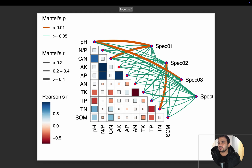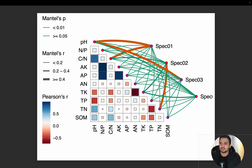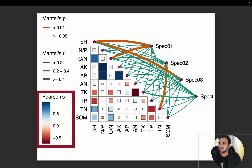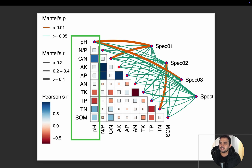This figure is representing two matrices. Here you can see parameters such as pH, nitrogen to phosphorus, carbon to nitrogen, and AK. This is the simple correlation — in this case, Pearson correlation. So if we want to see the correlation of pH with SOM parameter, you can relate its color with the Pearson correlation coefficient.